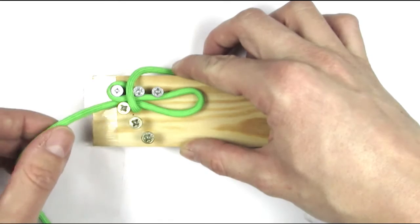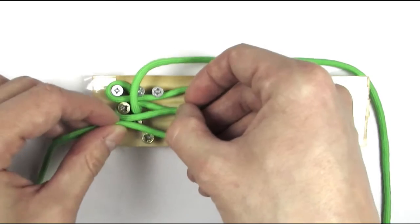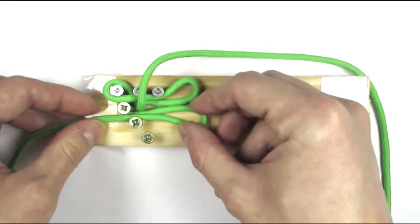We're going to take the bottom or left cord and make another bight, like this.